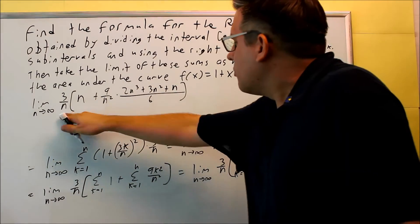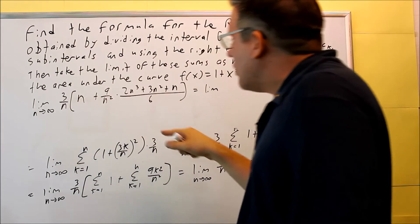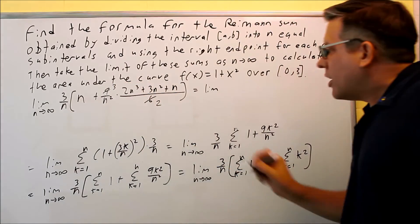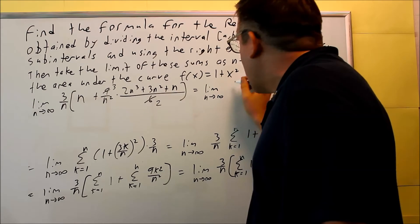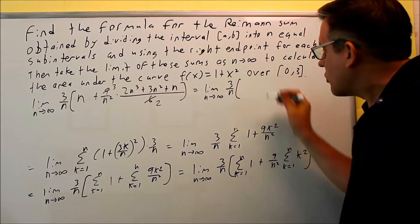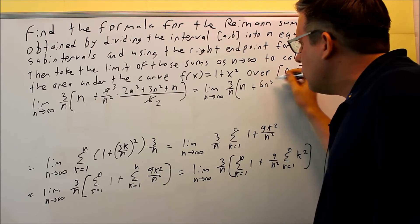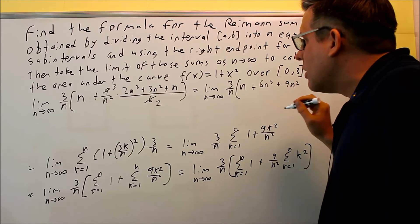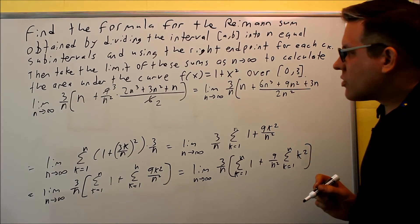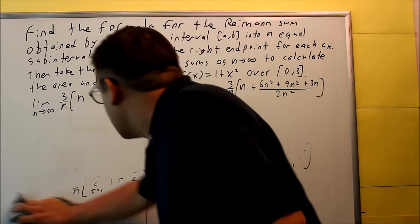Now we multiply everything out. First, a simplifying step: after dividing by 3, we multiply the fractions together — we still have the n term, and multiplying 3 across the numerator of the other fraction gives 6n³ + 9n² + 3n, all divided by 2n². Then finally we're at the point where we can distribute the 3/n into everything: 3/n times n gives 3.